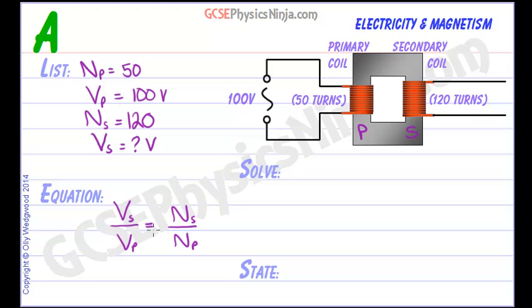Note you can turn this formula upside down - just flip both sides and it'll work just as well. But I prefer to use this version because we're usually finding the secondary voltage, the output of the transformer, and that's already at the top of the fraction, which is useful.